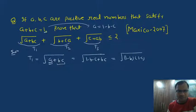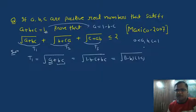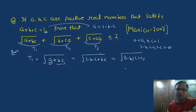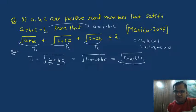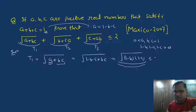a, b, c are positive real numbers whose sum is 1. Therefore, we can say that all three numbers lie between 0 and 1. And if a, b, c lie between 0 and 1, then 1 minus b, 1 minus a, and 1 minus c are all positive real numbers. So we can apply the AM-GM inequality here. This term represents the geometric mean of two numbers, 1 minus b and 1 minus c, so it is definitely less than or equal to their arithmetic mean.